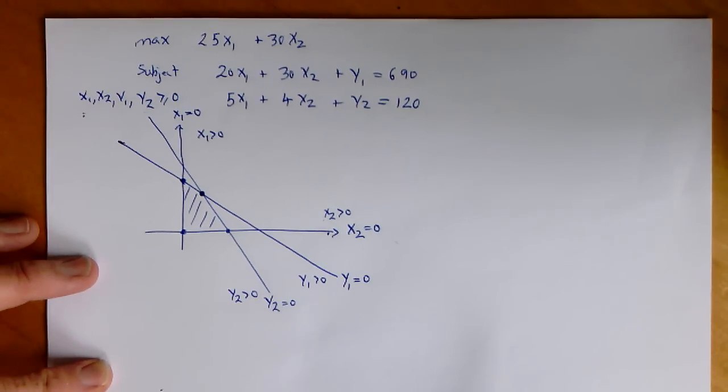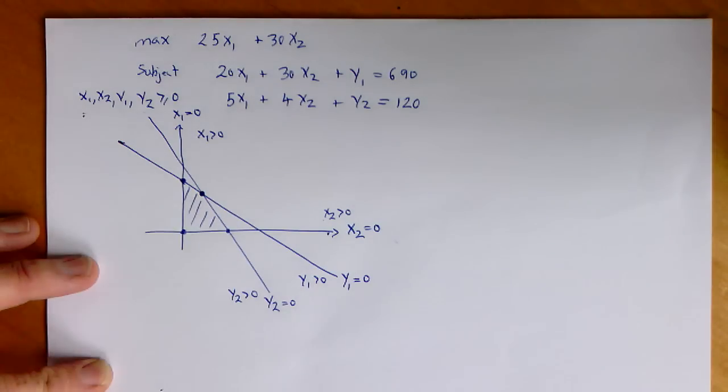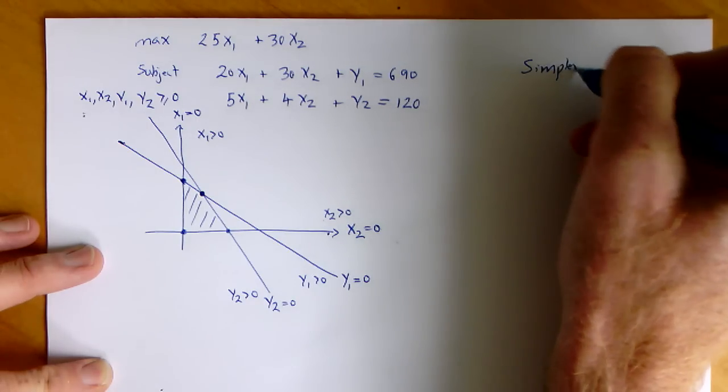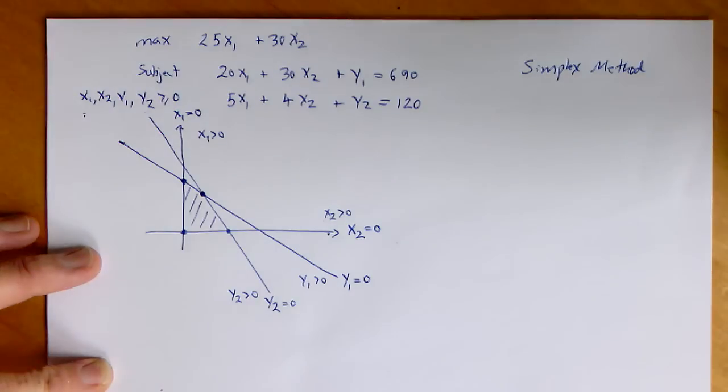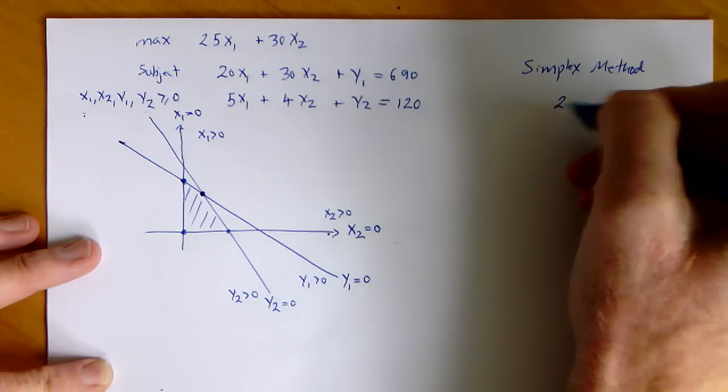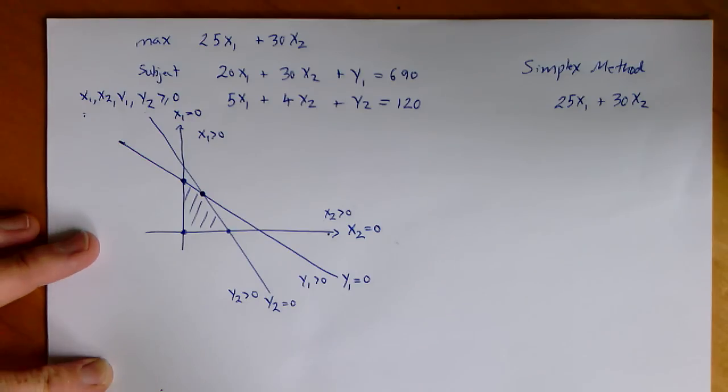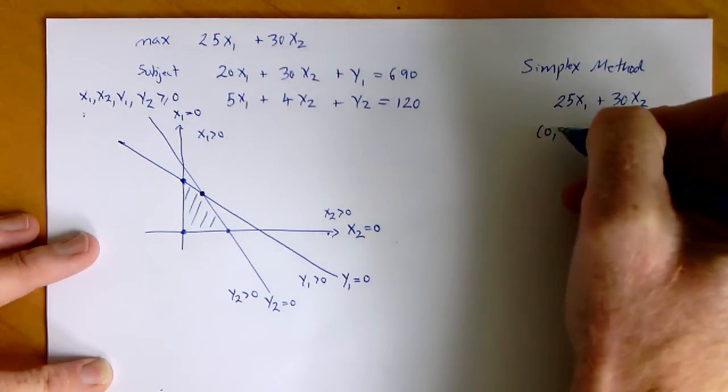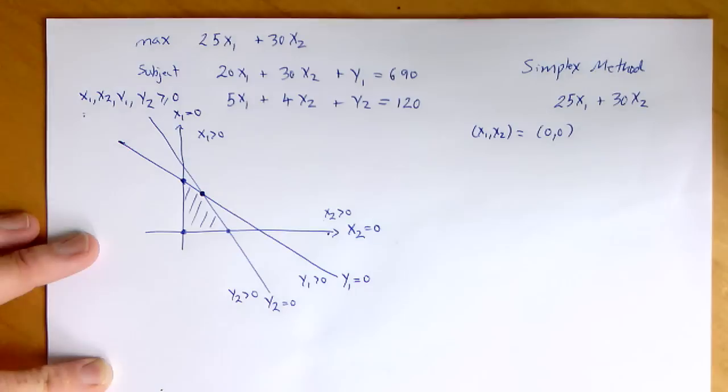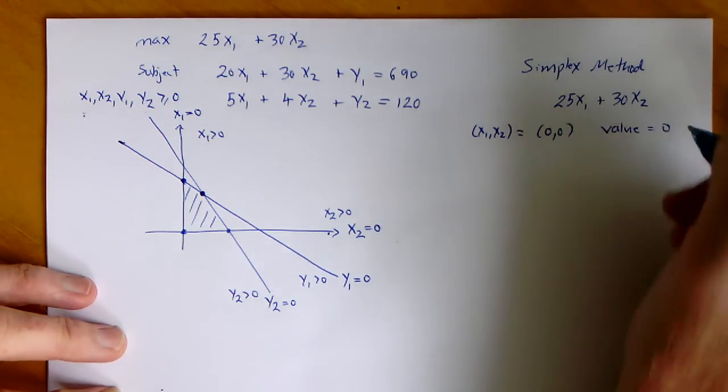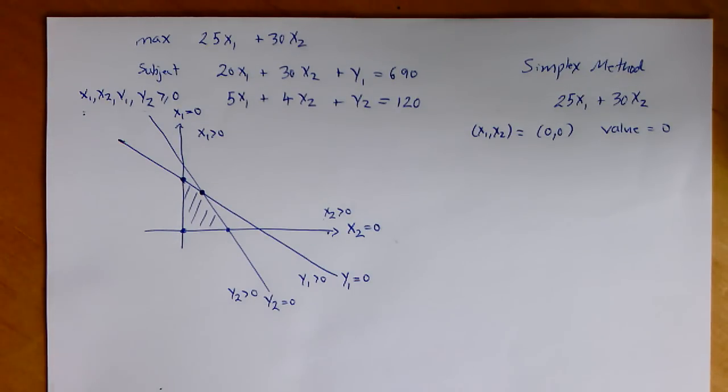We know from the theorem that we read about that the optimum is going to be at an intersection point. Simplex method. Here we think about the simplex method conceptually. Initially, we want to maximize our function 25x1 plus 30x2. I'm going to assume that we already have a feasible point. Here we're going to take our first intersection point, which is 0, 0. We know that the value of the function there is 0.